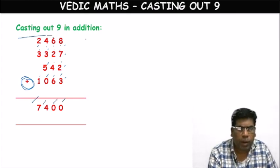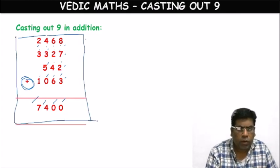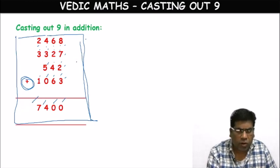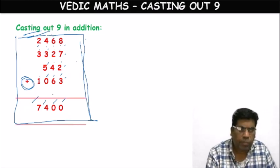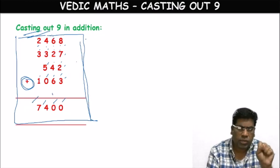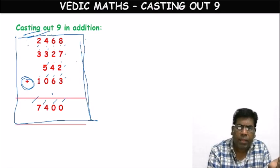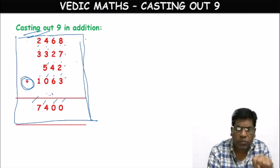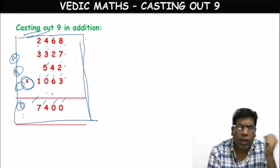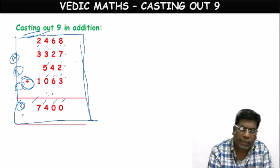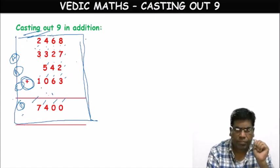This method is used not to solve problems, but to check their correctness. In competitive exams, they give a sum with four options — A, B, C, D — asking which is correct. At that time, we can make use of this technique.